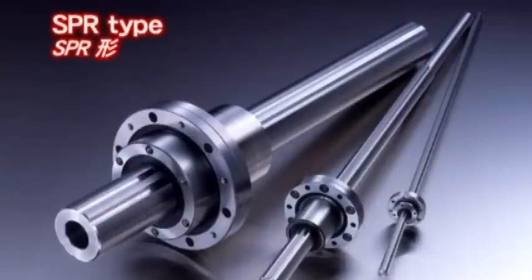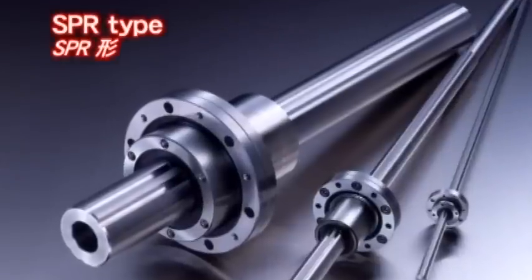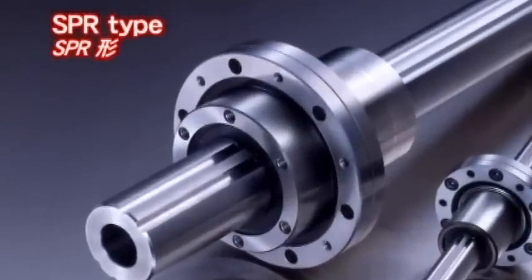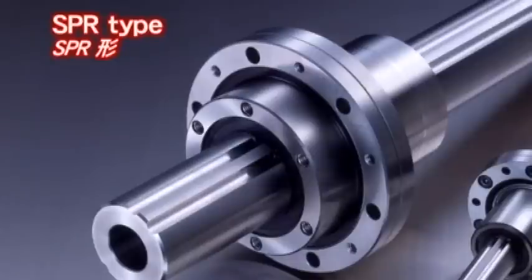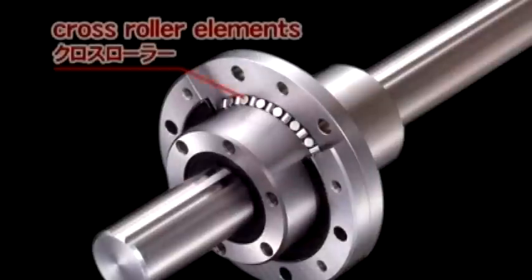NB's SPR spline consists of both spline and rotary function within a single component. The SPR is the ideal component for applications requiring multi-motion movement of both linear and rotary.